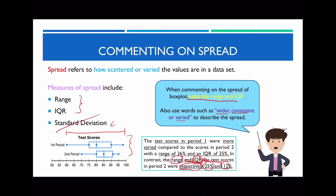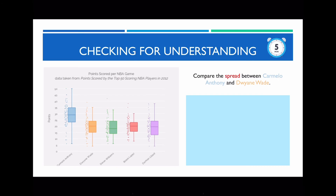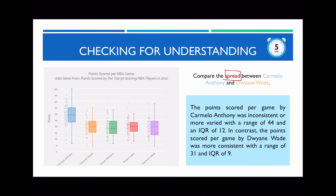Using the basketball example, compare the spread including both range and IQR. The answer: 'The points scored per game by Carmelo Anthony were inconsistent, with a range of 44 and an IQR of 12. In contrast, the points scored per game by Dwyane Wade were more consistent with a range of 31 and an IQR of 9.' These values are smaller compared to Carmelo Anthony.